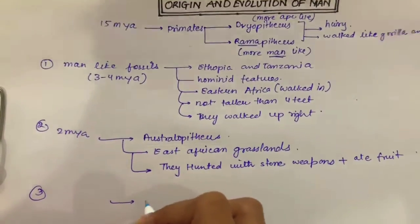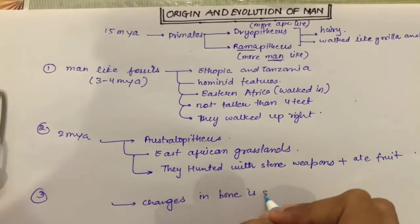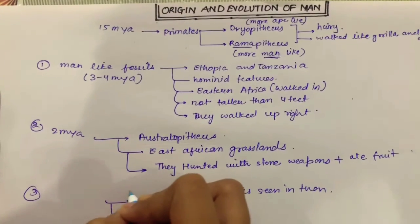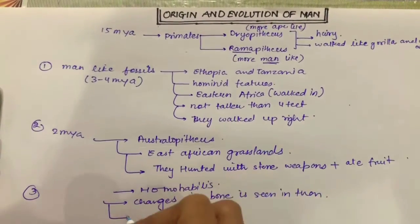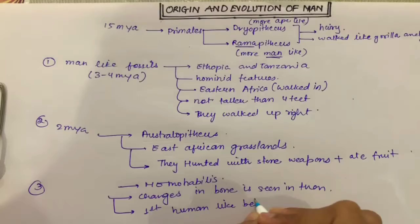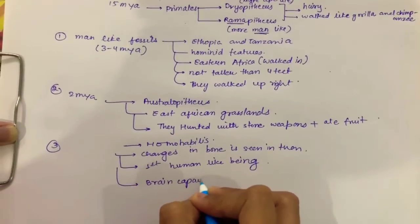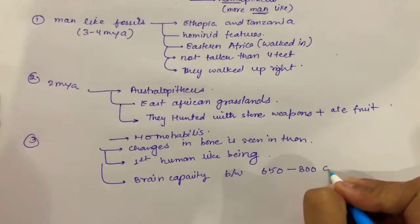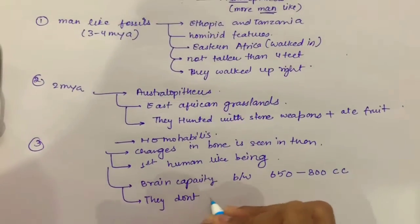Next, changes in bones were seen in them and they were known as Homo habilis, the first human-like being. They had a brain capacity between 650 to 800 cc. CC is cranial capacity. But they didn't eat meat.